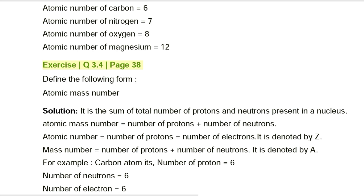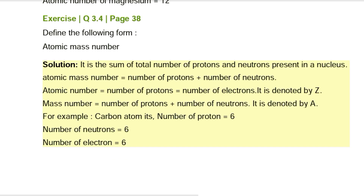Exercise Q3.4, page 38. Define: Atomic mass number. Solution: It is the sum of the total number of protons and neutrons present in a nucleus. Atomic mass number = number of protons + number of neutrons. Atomic number (Z) = number of protons = number of electrons, denoted by Z. Mass number (A) = number of protons + number of neutrons, denoted by A.